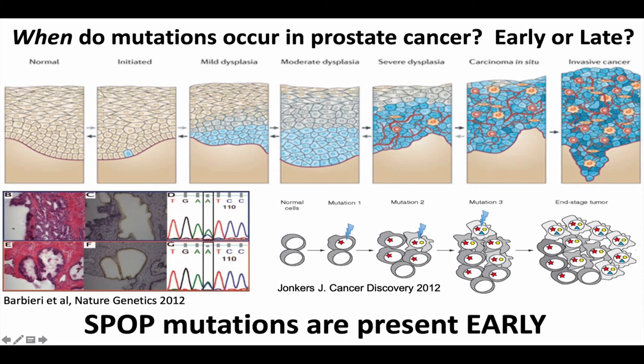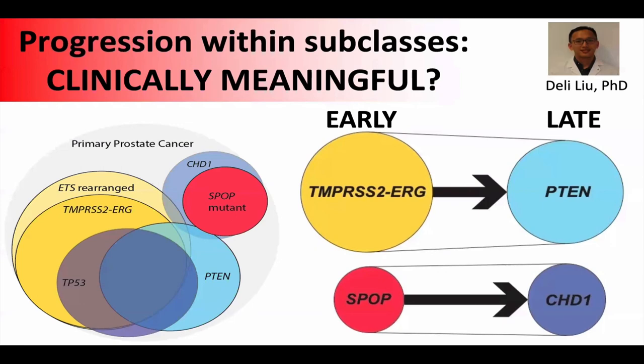By a number of metrics, both ERG alterations and SPOP mutations appear to happen very early in the natural history of this disease. It's well established that ERG alterations happen early and PTEN deletions happen later in ERG-positive tumors. We see a similar thing in the other subclass, where SPOP mutations appear to happen early and CHD1 deletions appear to happen later in those tumors.